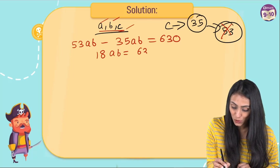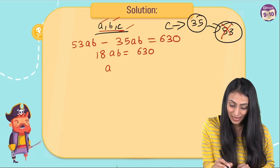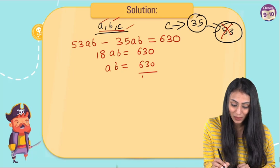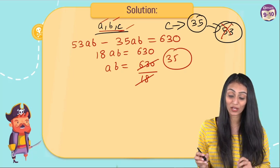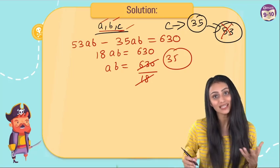That equals 630. So I can say ab would be equal to 630 by 18. If you cancel this out, you get 35. So the product of other two numbers is 35 in this case.